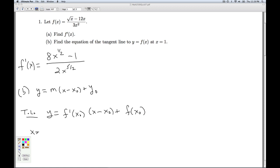So here my x naught is 1. So I can find f of 1. I go to the original formula here and substitute in x equals 1. That's the square root of 1 minus 12 times 1 over 3 times 1 squared. The square root of 1 is 1. 1 minus 12 is negative 11 over 3. So that's my y naught.